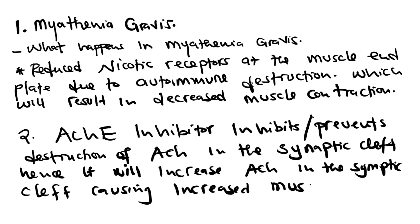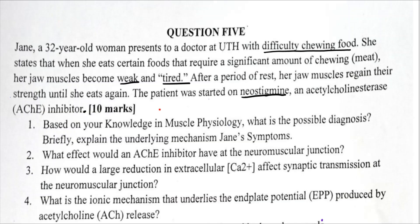Acetylcholine is the neurotransmitter that stimulates nicotinic receptors to cause muscle contraction. If there is increased acetylcholine in the synaptic cleft, this will increase muscle contraction. Acetylcholinesterase is the enzyme that normally breaks down acetylcholine, but if we give an acetylcholinesterase inhibitor, there won't be any enzyme breaking down the acetylcholine in the synaptic cleft. Hence, there will be an increase in acetylcholine that results in increased muscle contraction — this is how it helps people with myasthenia gravis.